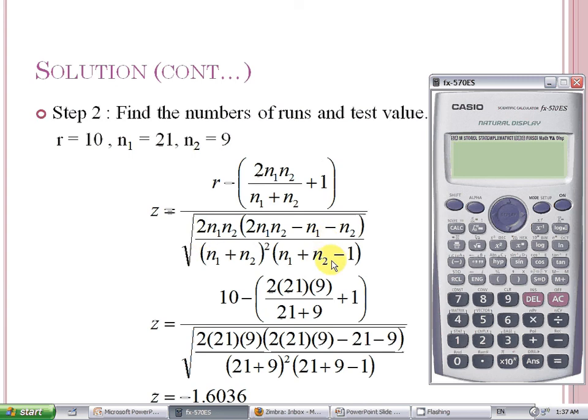If we do the calculation directly, like 10 minus 2, 21, 9 over 21 plus 9 plus 1 into the calculator, it will become very messy.